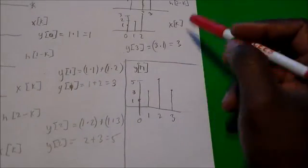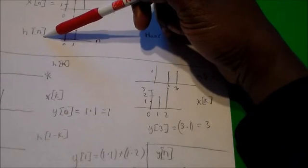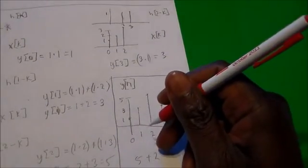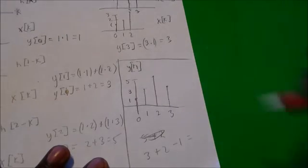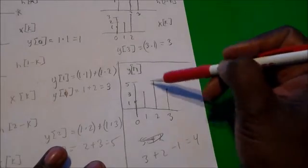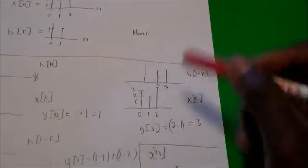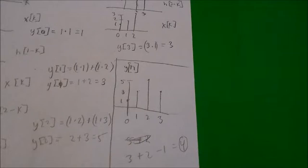Notice that we started with a signal x of n that had three values and an impulse response h of n that had two values. The number of samples in the output is three plus two minus one, which equals four samples — and indeed we have four output values. In general, the length of the convolution output is the sum of the lengths of the two input signals minus one. That's been a description of how to do convolution in a discrete time system. Check my YouTube channel for more information.